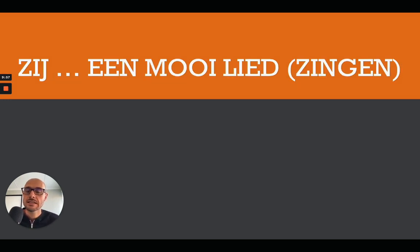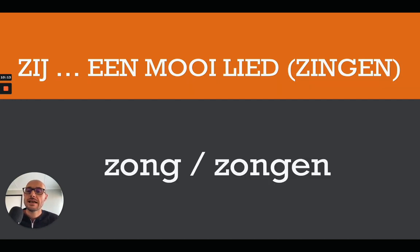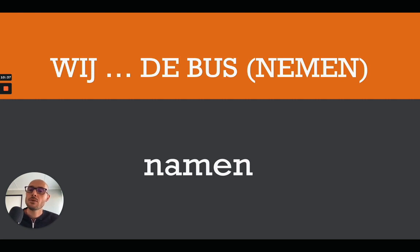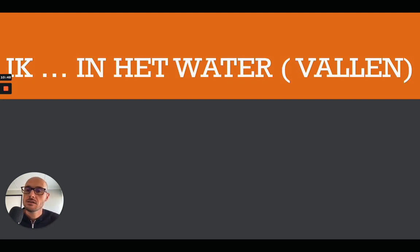Next: zij [blank] een mooi lied, and the verb is zingen — to sing. Since zij can mean she or they, both options are correct: zij zong or zij zongen een mooi lied — she sang or they sang a beautiful song. Then: wij [blank] de bus, and the verb is nemen — to take. The answer is wij namen de bus — we took the bus.